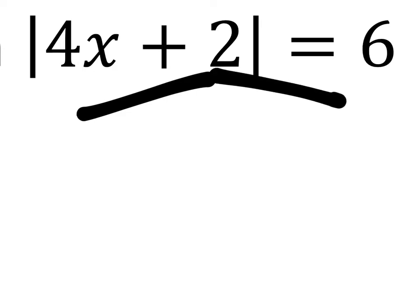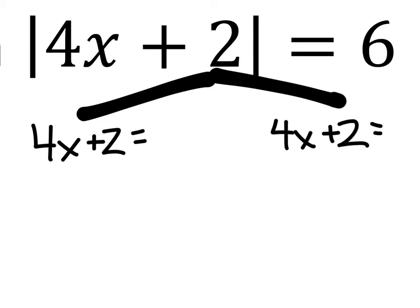Now, what's inside the absolute value is not going to change, and we discussed this in class. We have 4x plus 2 twice, but they're going to be equaling different things. First, it will equal 6. Second, it will equal the opposite of 6.